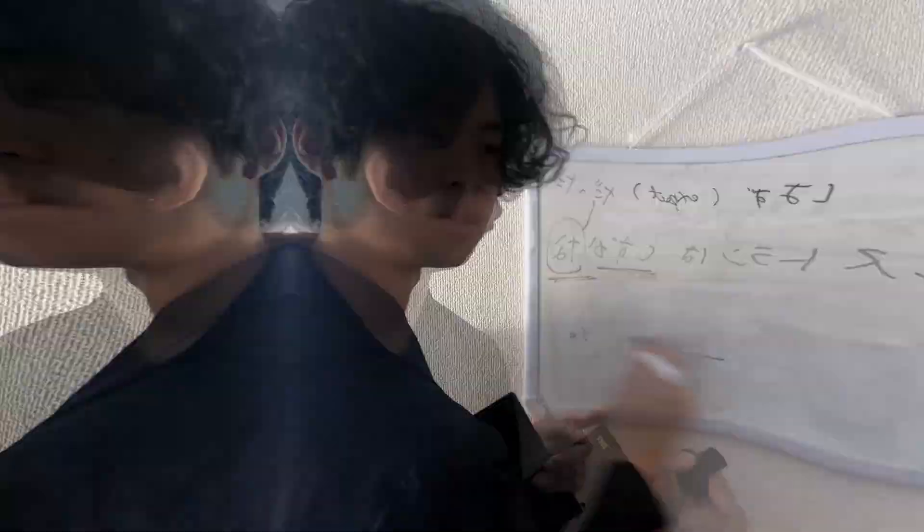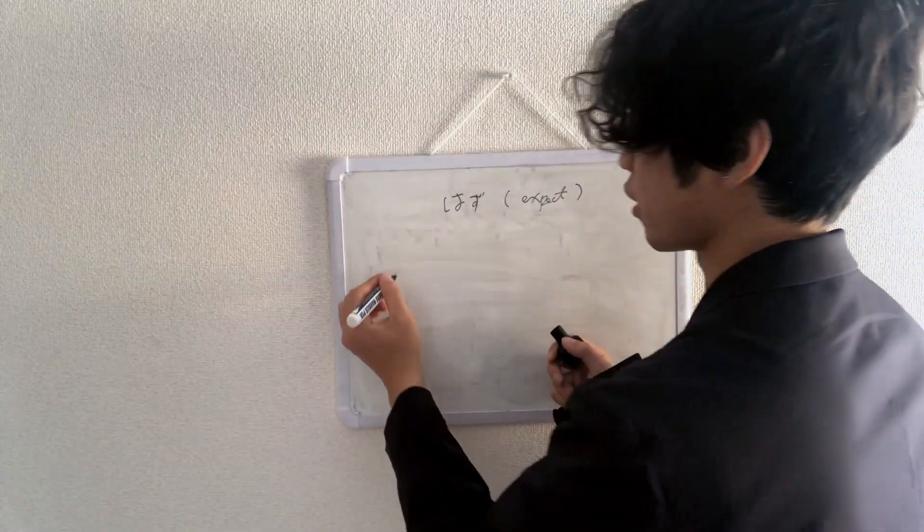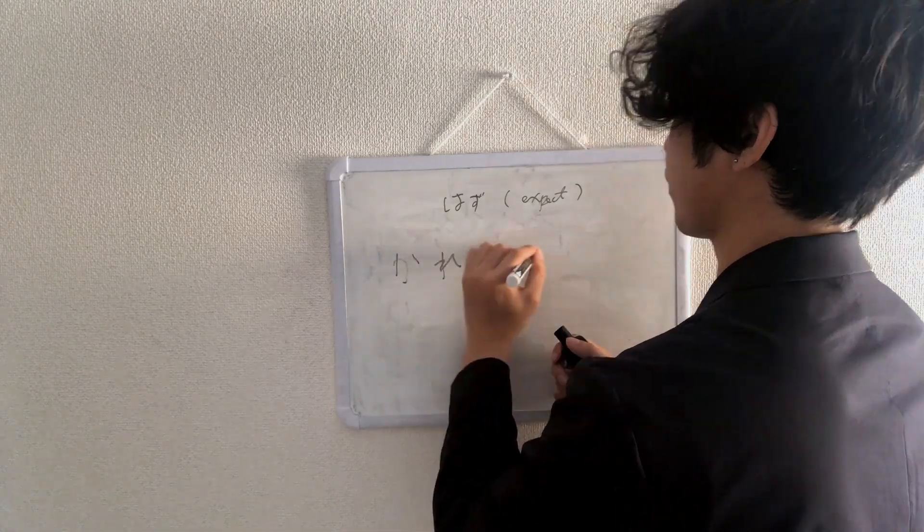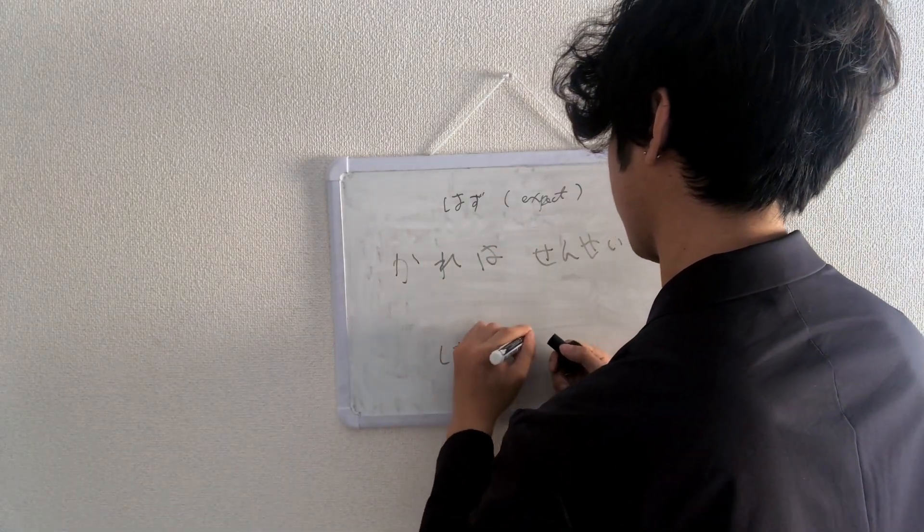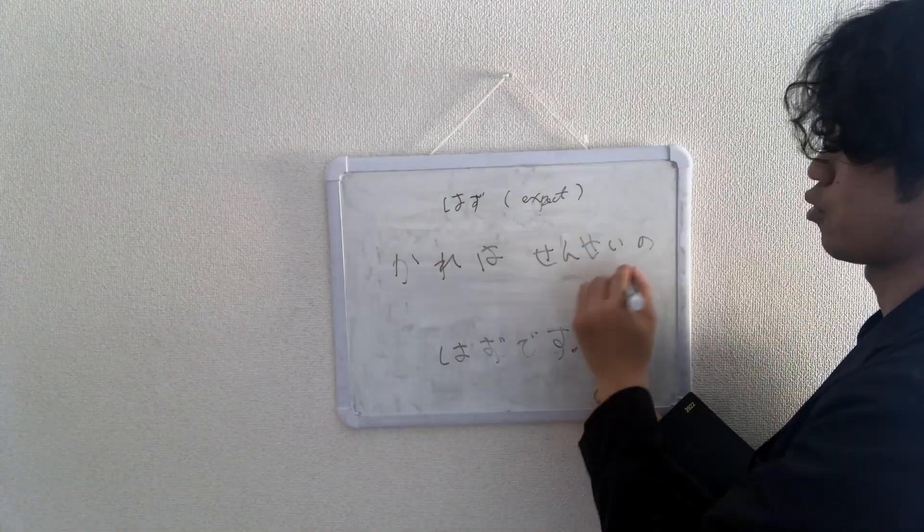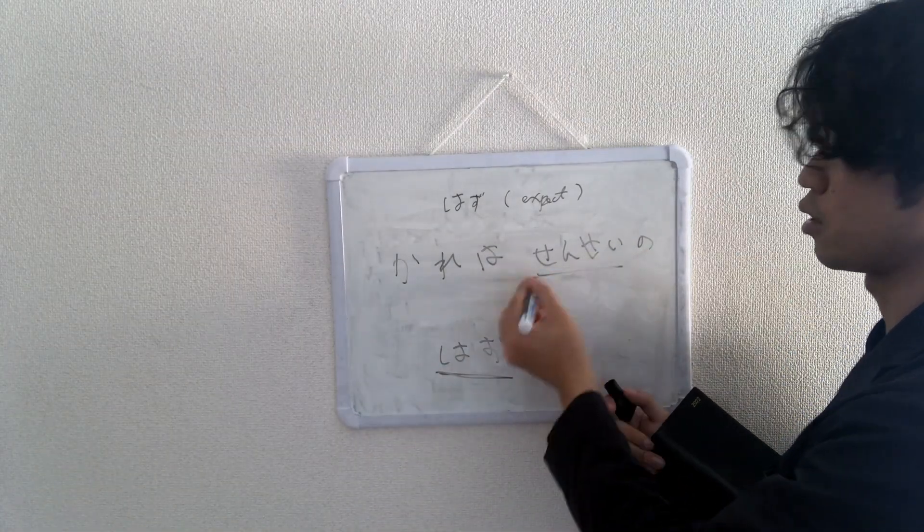That's な-adjective. Let's move on to nouns. He's supposed to be a teacher. 彼は先生のはずです. So 先生, let's look at はず here. 先生 is a noun, right? Teacher.